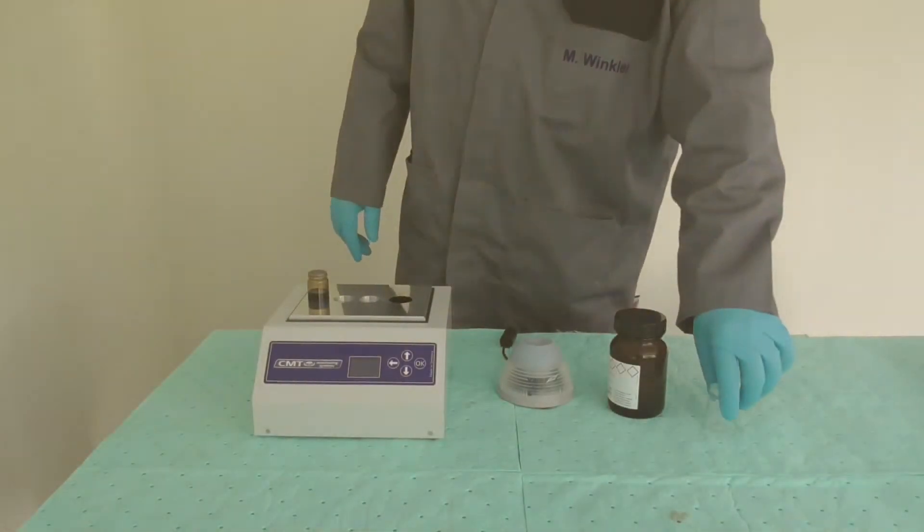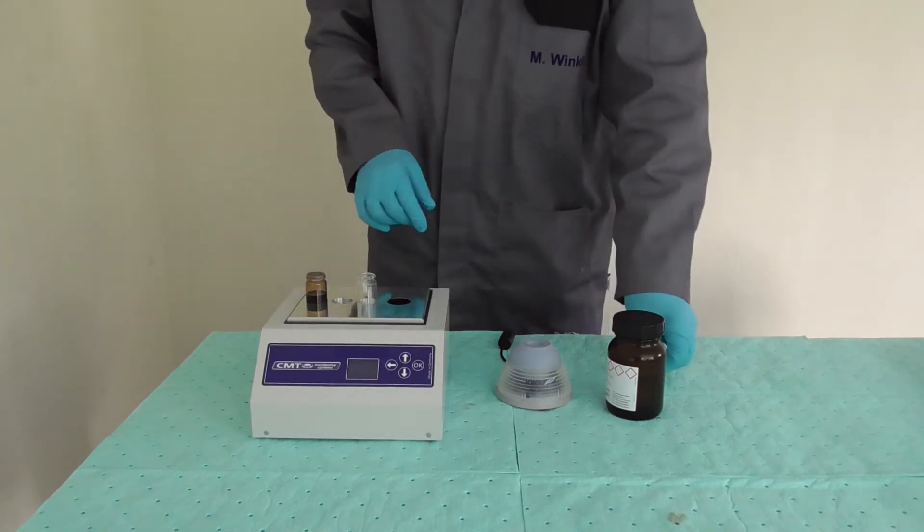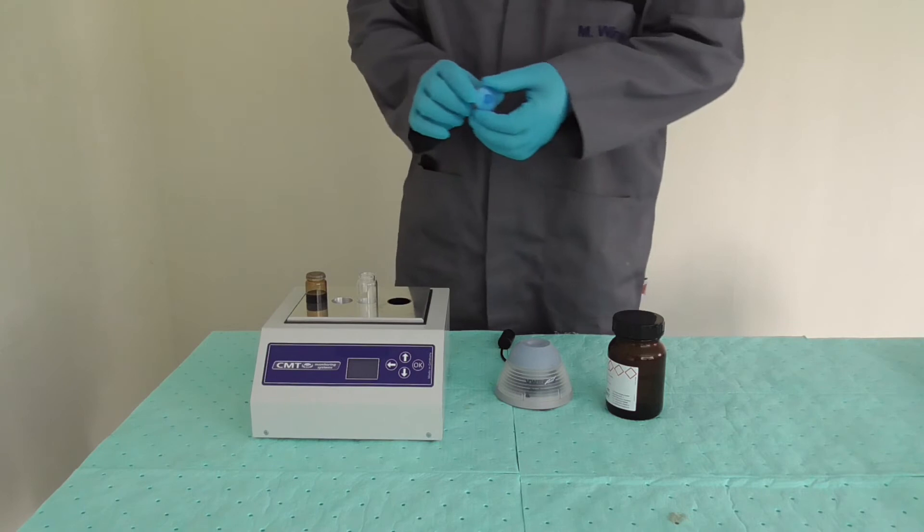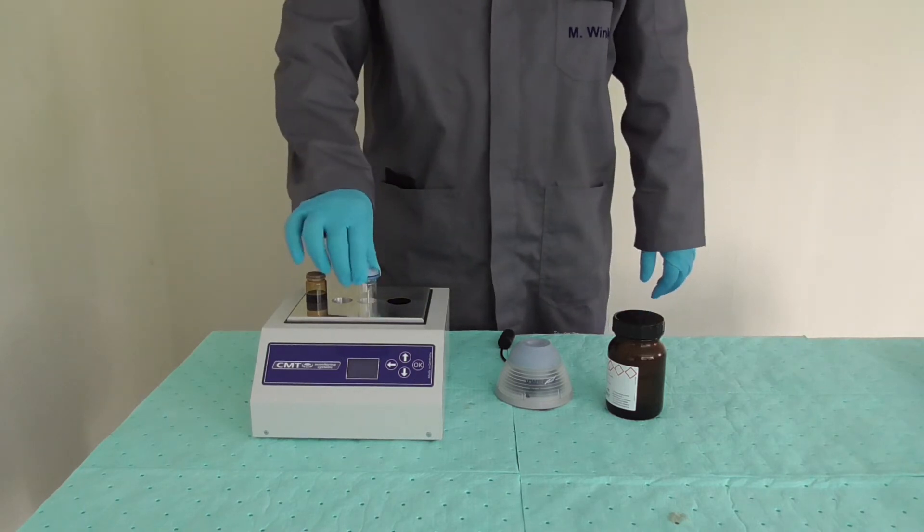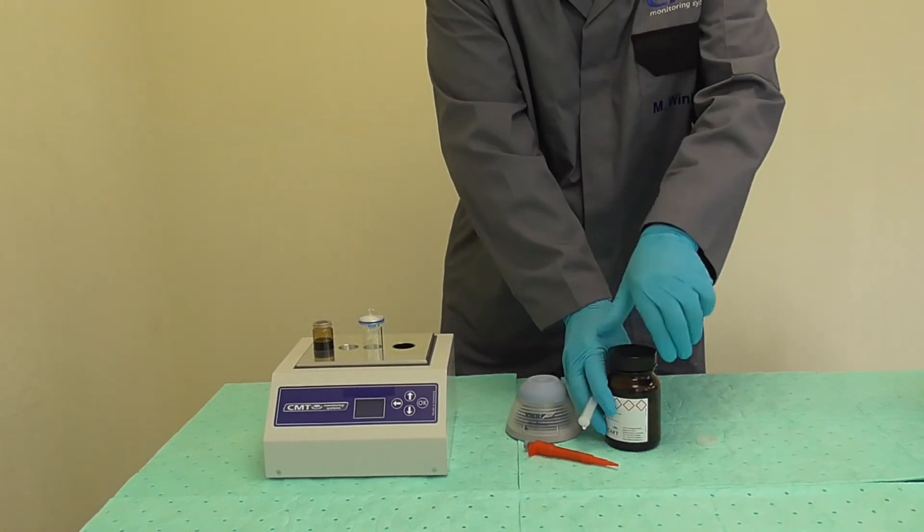Take a second clean vial, uncap it, and place it in one of the three vial holders on top of the device. Place a blue filter on the second vial. The filter needs to remain on the vial during the entire test. Please make sure the white side of the filter is facing you.